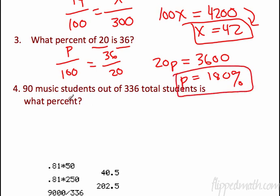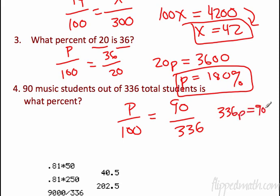Last one. 90 music students out of 336 total students is what percent? So it's P out of 100 equals 90 out of 336. The of is 336. So you cross multiply. We get 336P equals 9,000. Divide both sides.